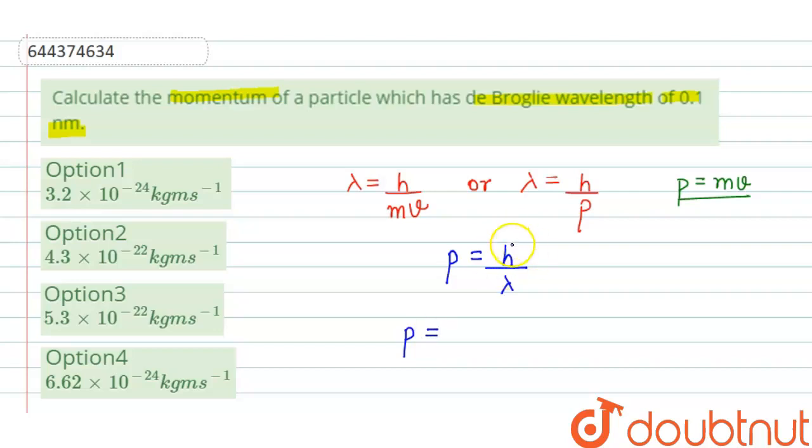p will be equal to h, which is the Planck's constant. Its value is 6.626 into 10 raised to the power minus 34 kg meter square per second.